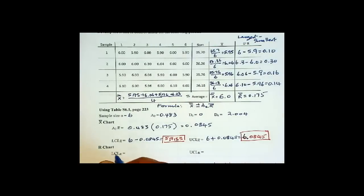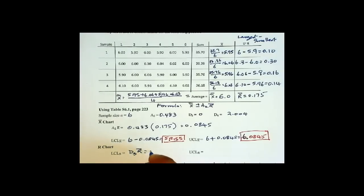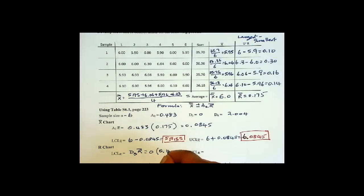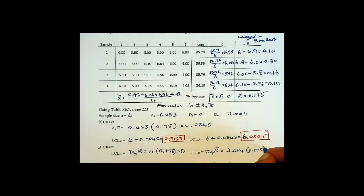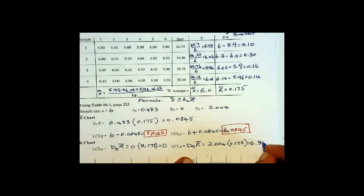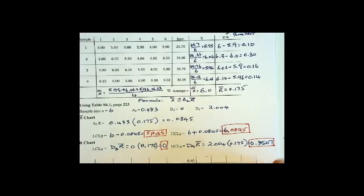Now the R chart lower limit is D sub 3 times R-bar, which is 0 times 0.175, so that is 0. The upper control limit is D sub 4 times R-bar, which is 2.004 times 0.175, which will give you 0.3507.